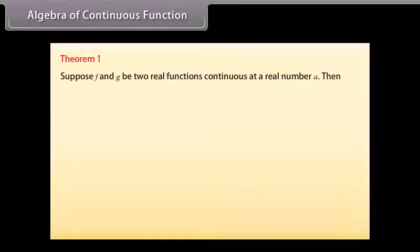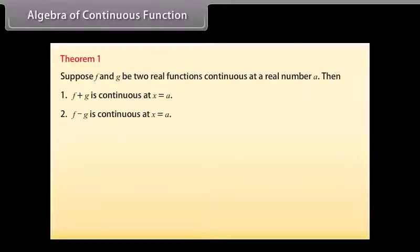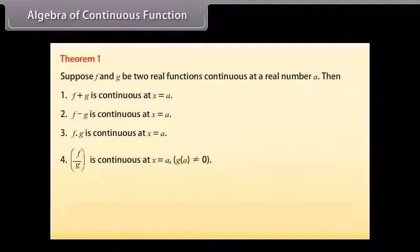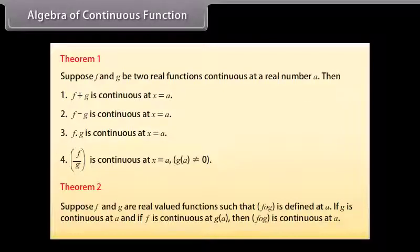Algebra of Continuous Functions. Theorem 1: Suppose f and g are two real functions continuous at a real number a. Then: (1) f + g is continuous at x = a; (2) f − g is continuous at x = a; (3) f × g is continuous at x = a; (4) f/g is continuous at x = a, provided g(a) ≠ 0. Theorem 2: Suppose f and g are real-valued functions such that f ∘ g is defined at a. If g is continuous at a and f is continuous at g(a), then f ∘ g is continuous at a.